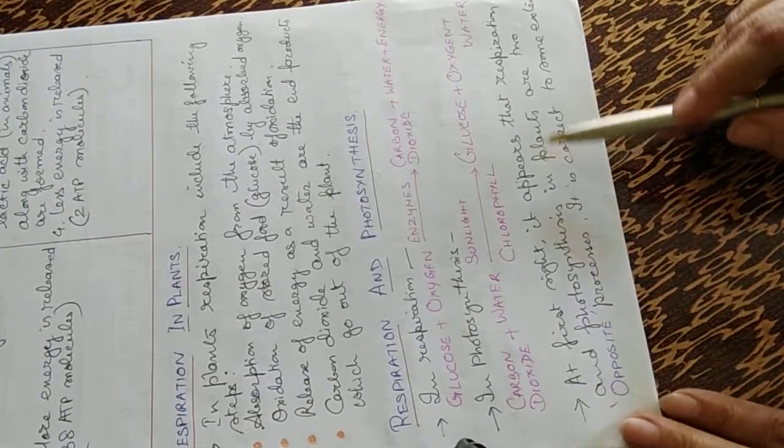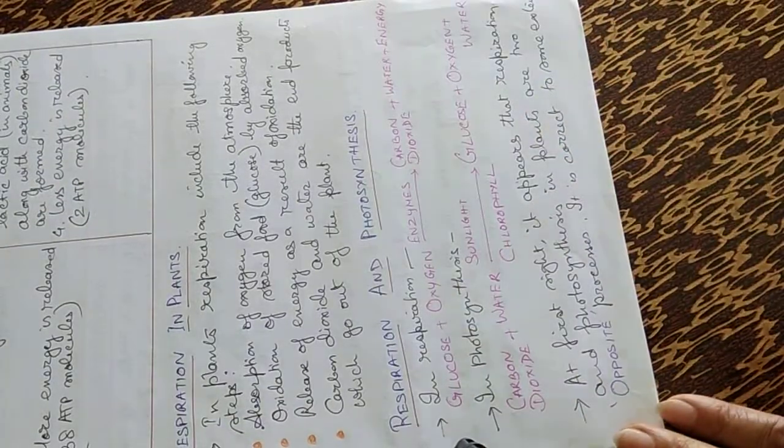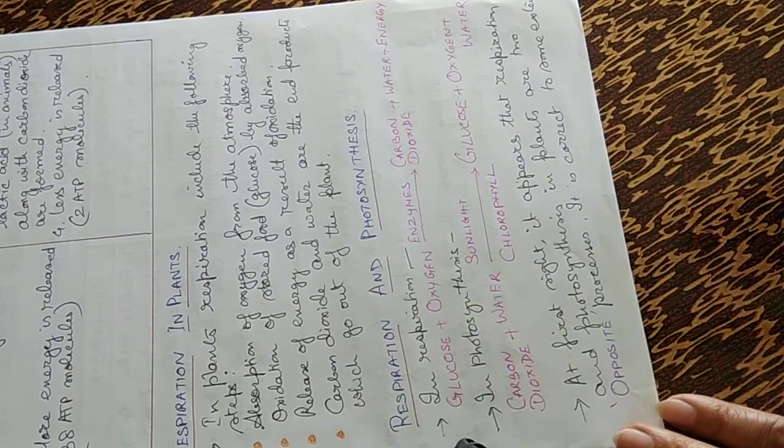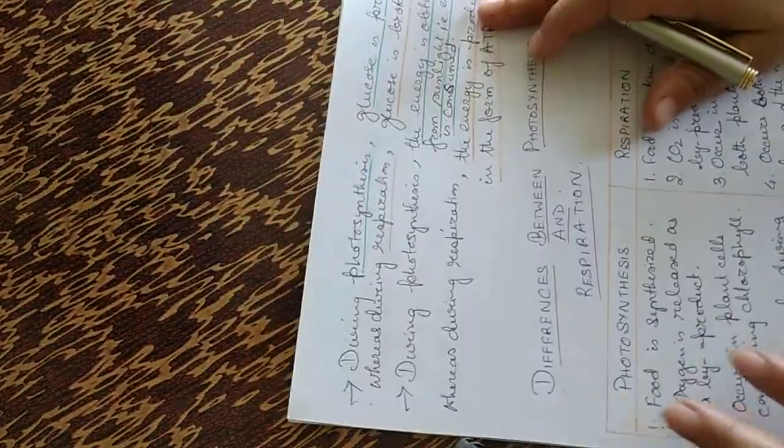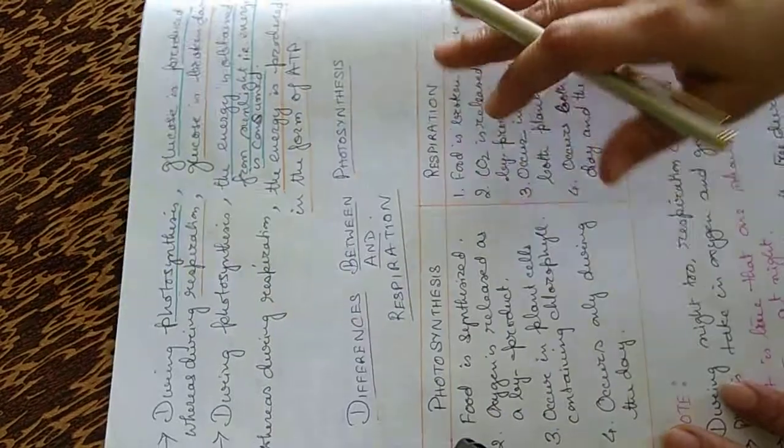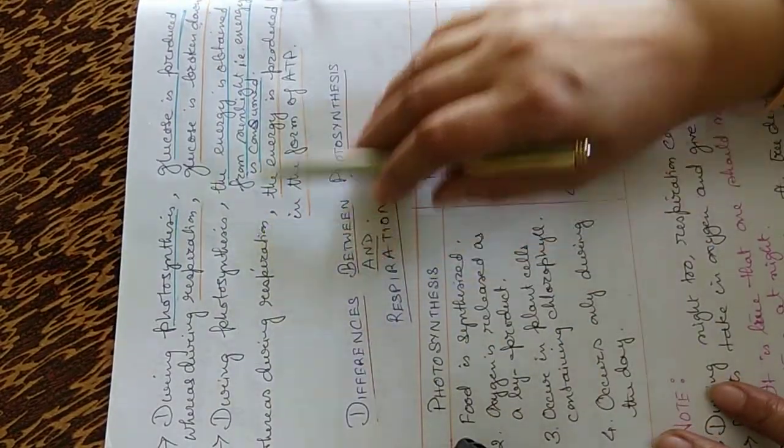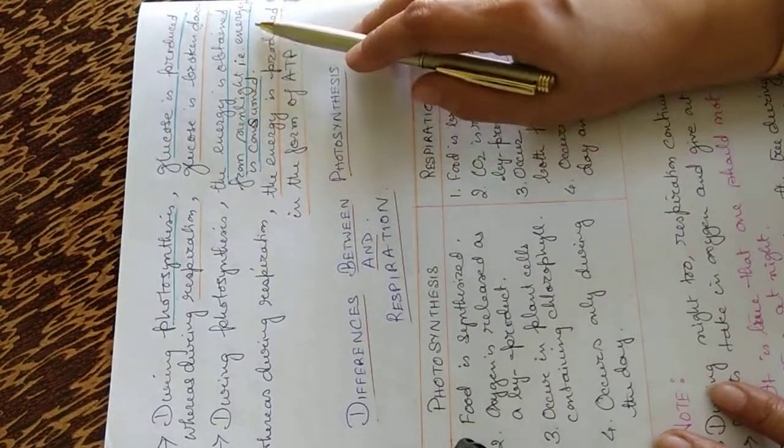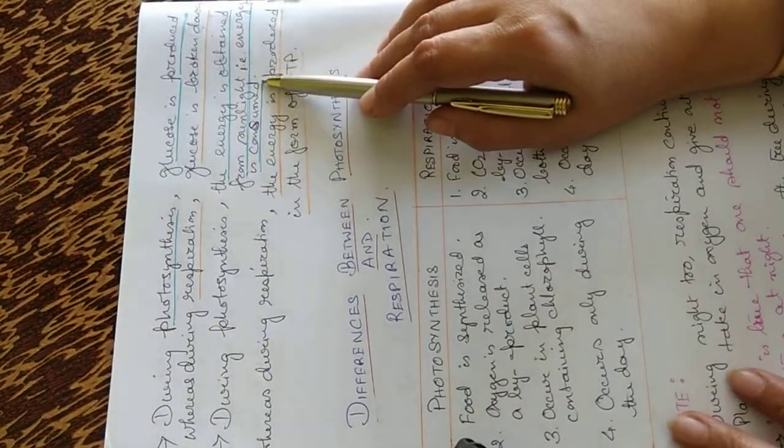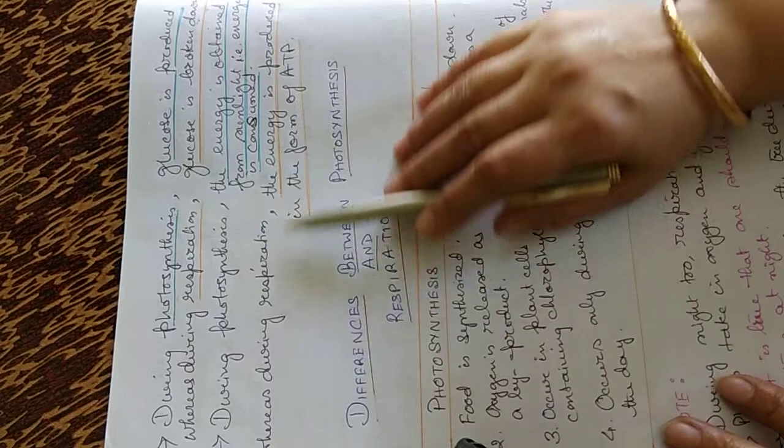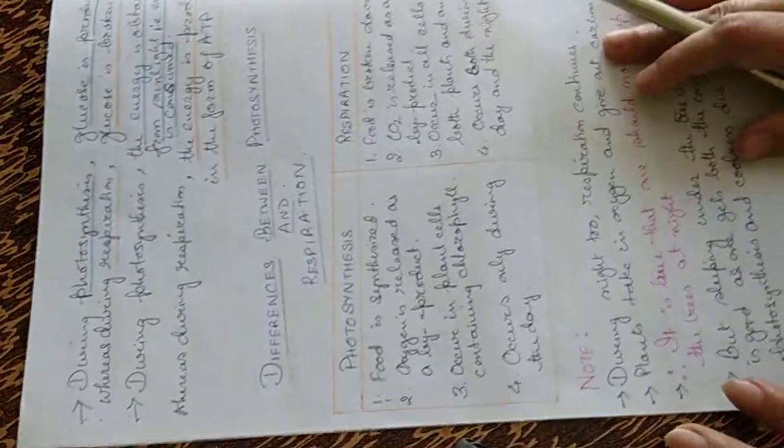At first sight, it appears that respiration and photosynthesis in plants are two opposite processes. It's almost true. You can see that during photosynthesis, glucose is produced whereas during respiration, glucose is broken down. During photosynthesis, the energy is obtained from sunlight, energy is consumed, whereas in respiration, the energy is produced in the form of ATP.